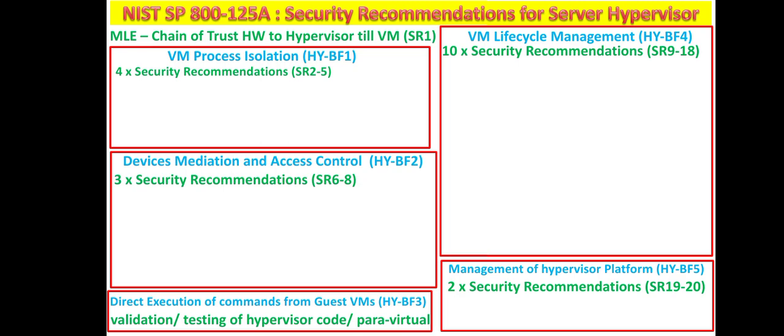The first security recommendation for baseline function one, VM process isolation, is that direct memory access should not be allowed and should be remapped via the Input/Output Memory Management Unit (IOMMU). VMs should not be able to directly access physical memory; this access must be controlled through the memory management unit.